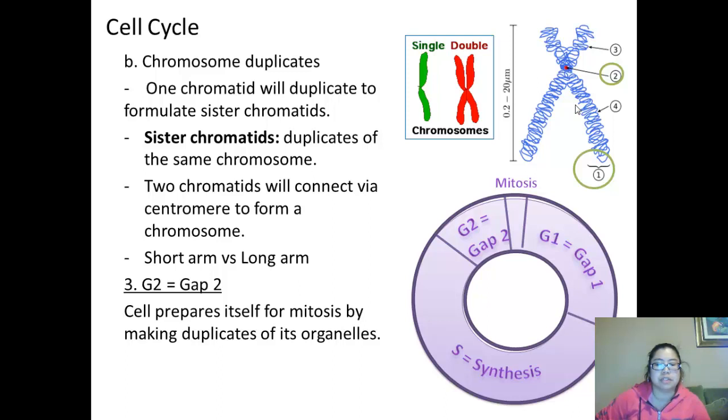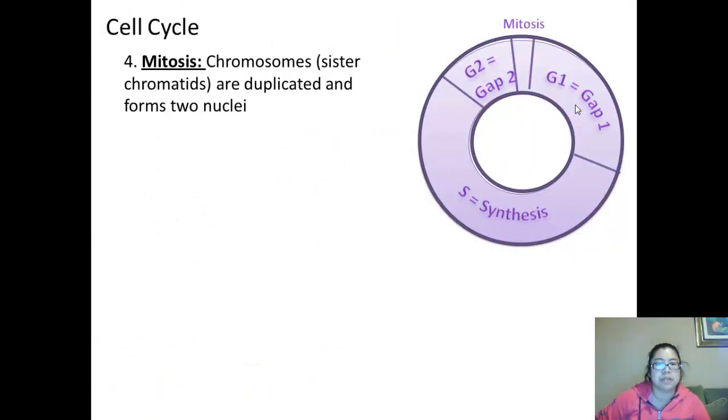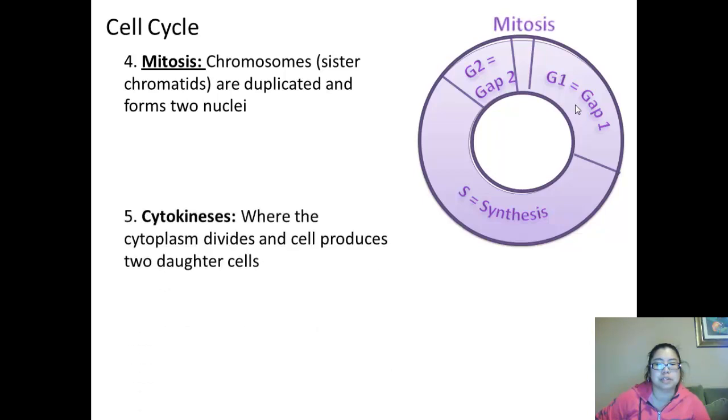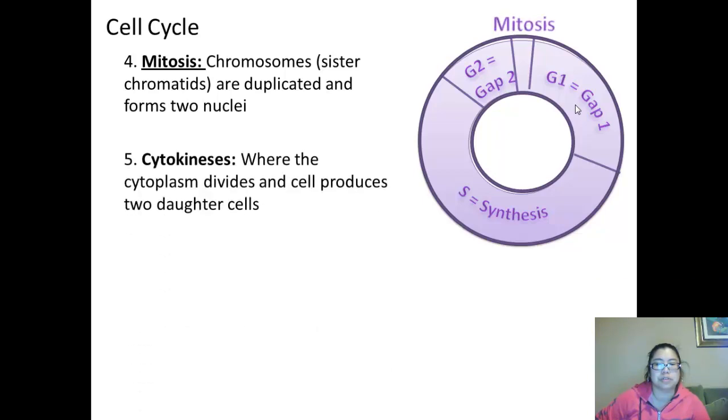The animal cells have centrioles that also duplicate. In mitosis is the last step afterwards. Basically, in mitosis, the chromosomes, which are sister chromatids, are duplicated and form two nuclei. And then finally, the last step of that will be cytokinesis, where the cytoplasm divides and the cell produces two daughter cells.